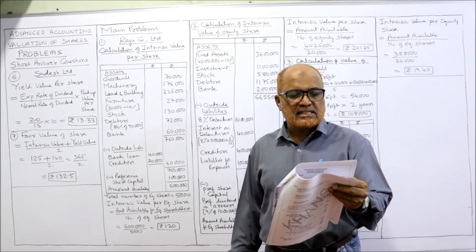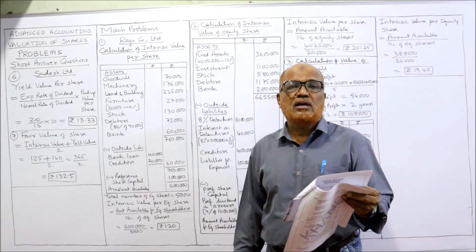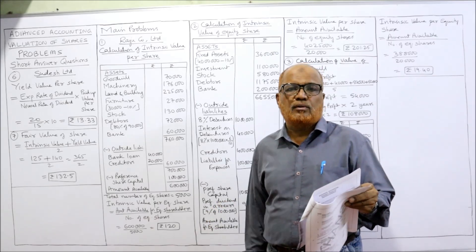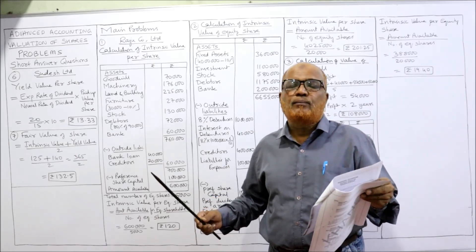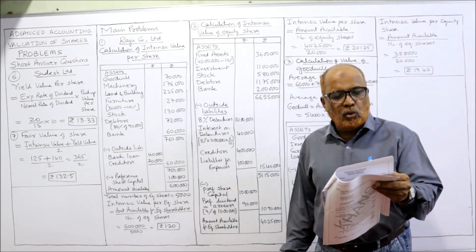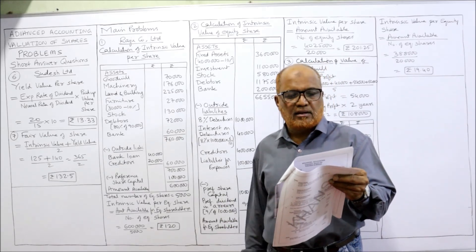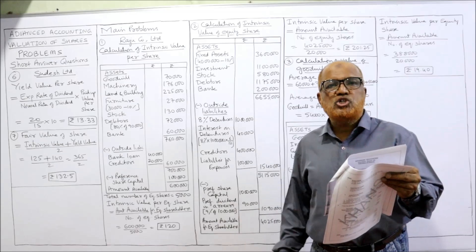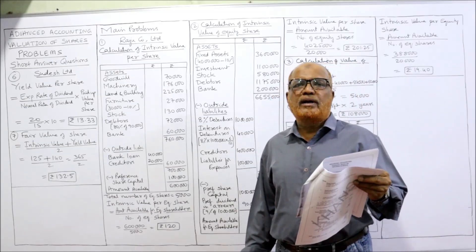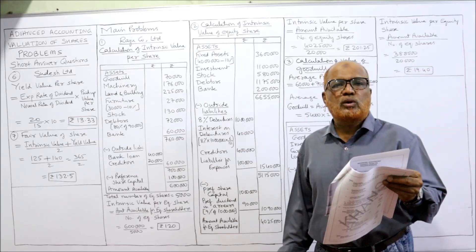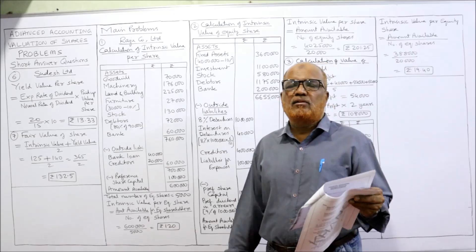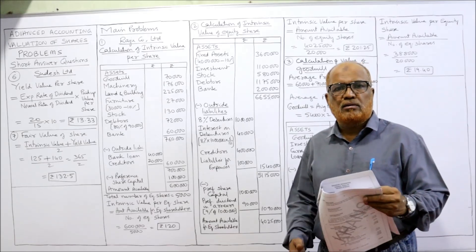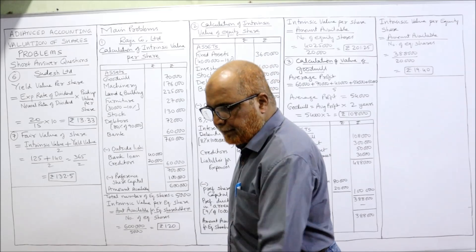Now the value of assets is assessed as follows — realizable values are given. If realizable values are given, we should take the realizable value, not the balance sheet value. If the realizable value is not given, then we take the balance sheet value. Goodwill present value ₹70,000 — take this. Machinery ₹1,76,000. Land and building ₹2,25,000. Stock in trade ₹1,30,000. Furniture is to be depreciated by 10%, so from the book value deduct 10%. Debtors are expected to realize 80% of book value, so whatever debtors are given, take only 80%. Find out the value of each equity share — again we have to find out the intrinsic value.